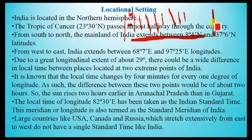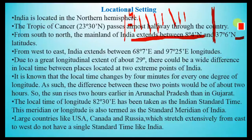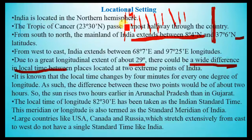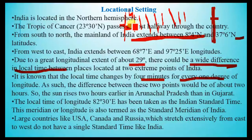The nation that gets the first ray of the sun is Japan, which is to the east of India. The eastern side of India gets the sun's rays first, so morning comes earlier there. The local time changes by four minutes for every one degree, so the difference between the two extreme points of India amounts to about two hours.